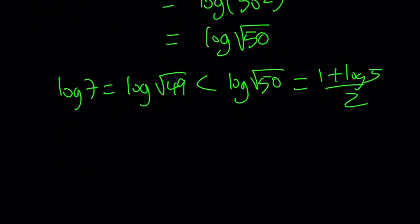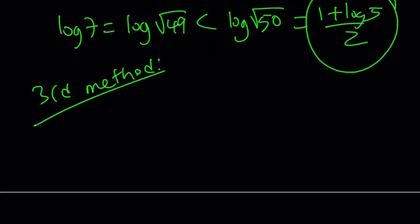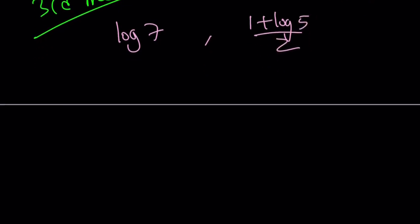Therefore, this is going to be our larger number. Let's go ahead and talk about the third method real quick. The third method uses this idea. So again, we're trying to compare log 7 and 1 plus log 5 divided by 2.